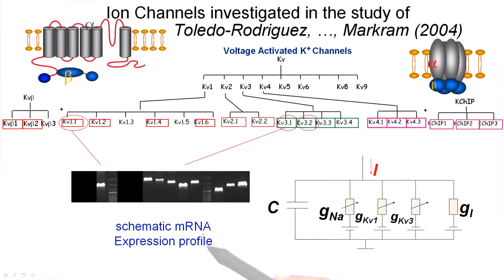For example, for the potassium channels, there are different families. There are voltage-dependent potassium channels, voltage-activated potassium channels, which come in families Kv1, which has sub-classes Kv1.1, Kv1.2, and so forth. Forty or so potassium channels easily.